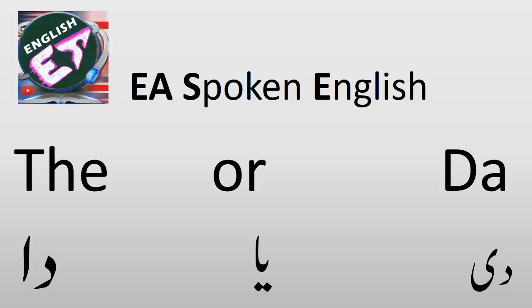Toh ye ek tapsra sa chalta aya, jaise sabse pahle murgi ayi ya anda aya. Toh aisi chiz jo bilkul hi na mumkin ho, toh woh tapsra chalta aata hai. Kyo na hum is tapsre ko khatam kar dein? Kyoki ab is ka hal nikal aya hai. Main aapko sirf ek lafz se hi define kar dunga. Woh lafz kya hai?